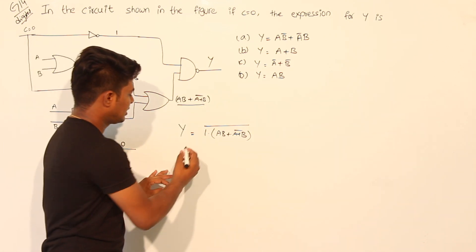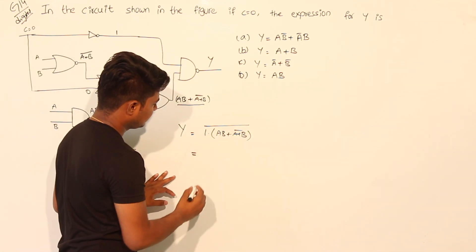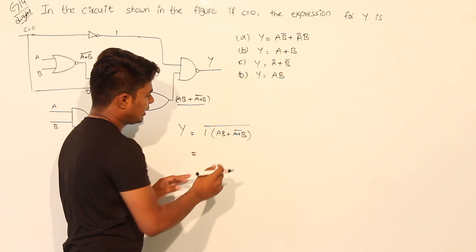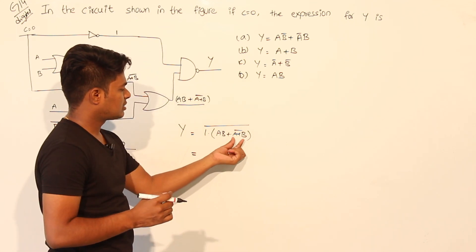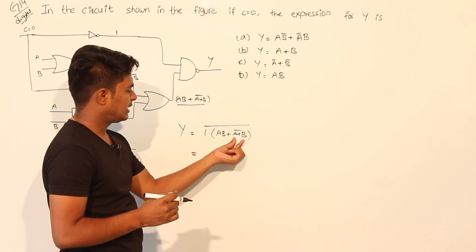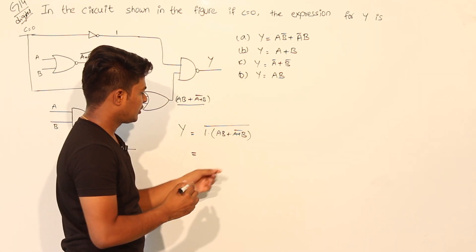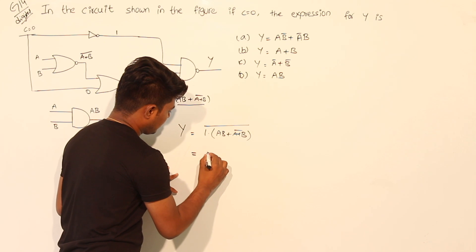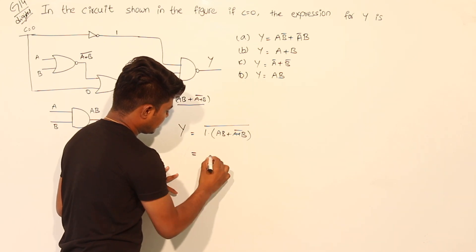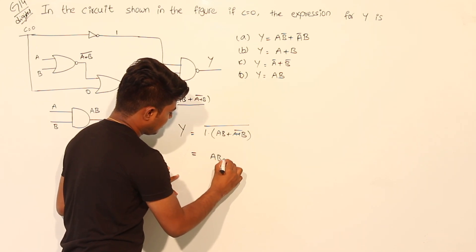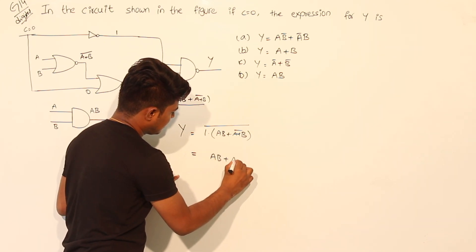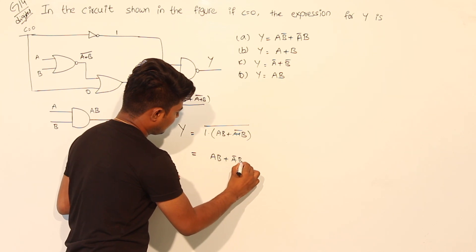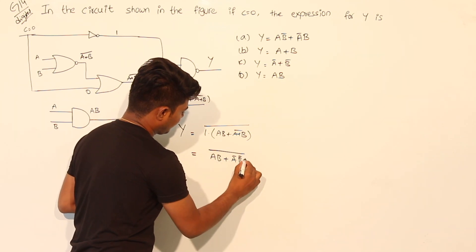If we simplify this using De Morgan's theorem, we can write (A + B) bar as A bar dot B bar. So the expression becomes: 1 into [AB + A bar dot B bar] whole bar.